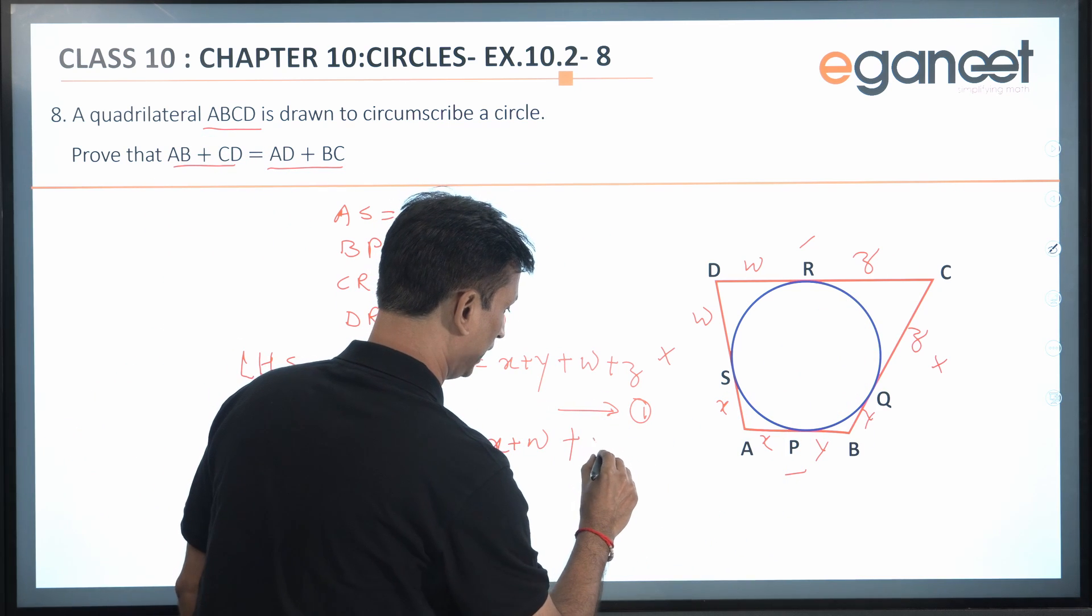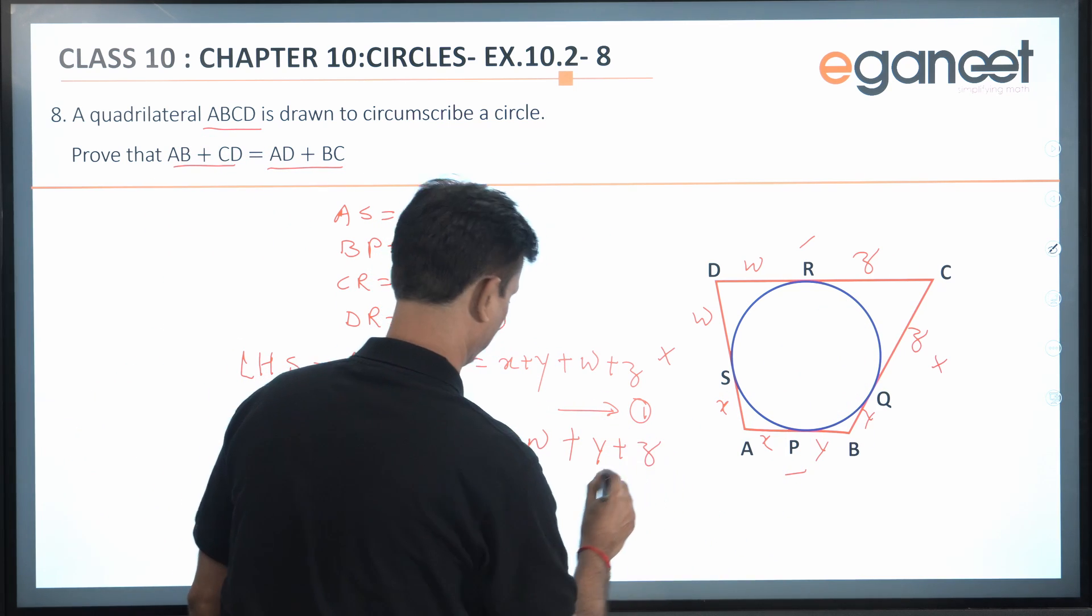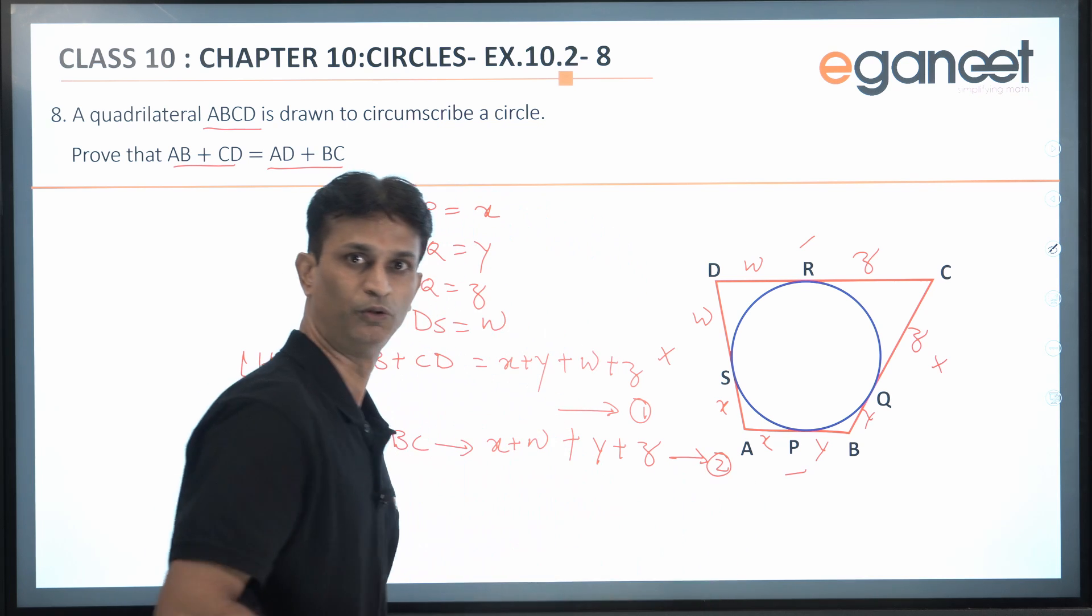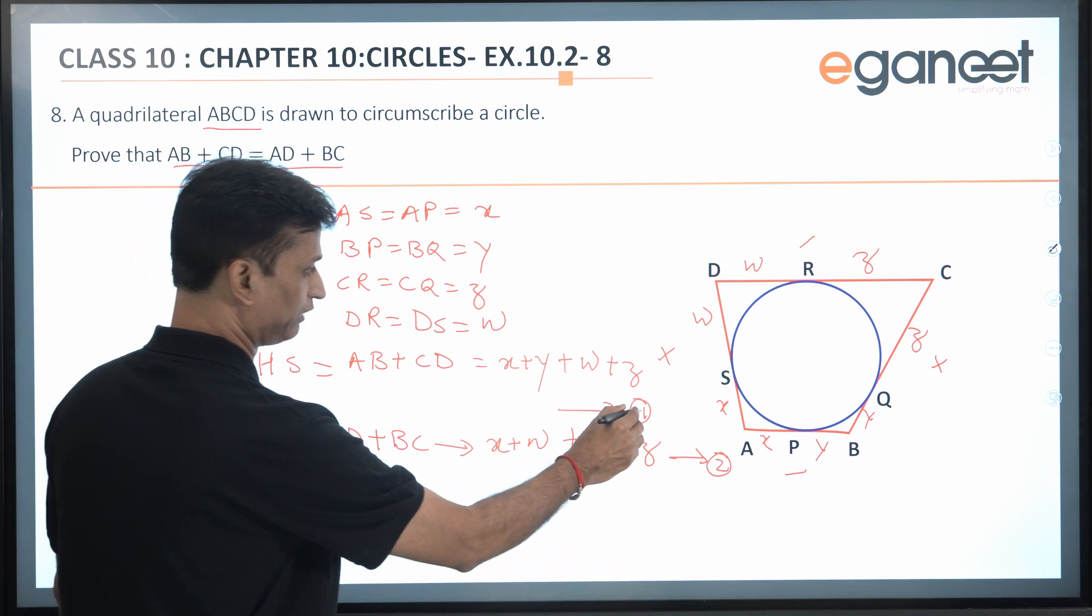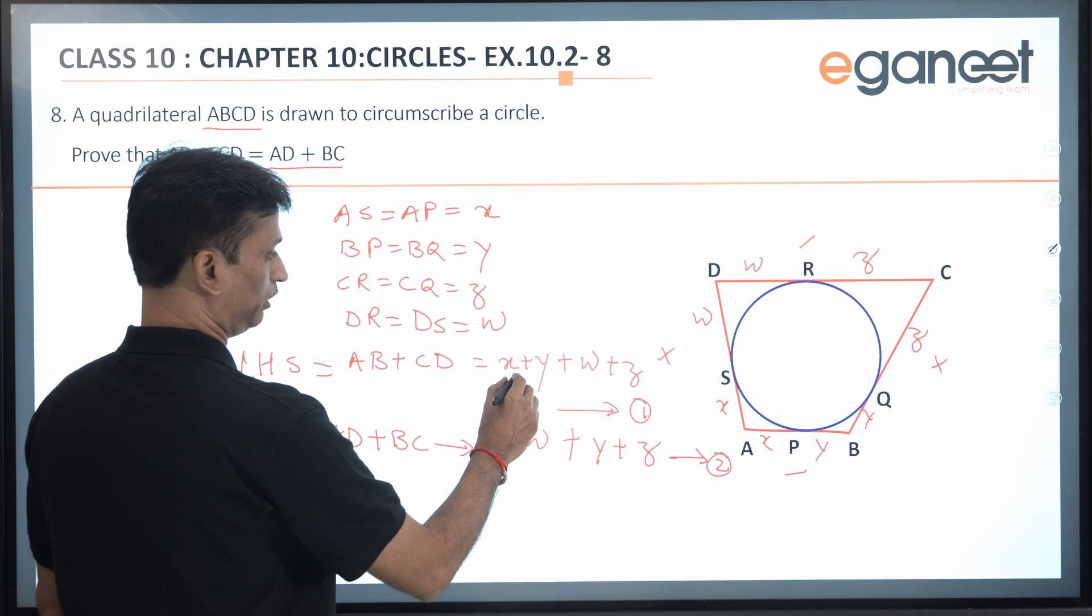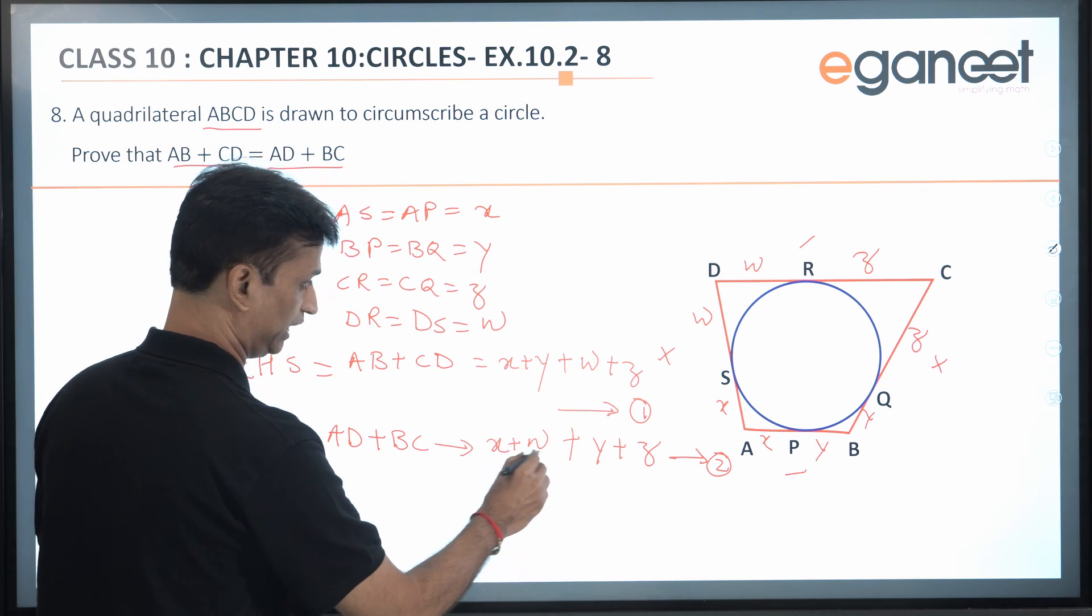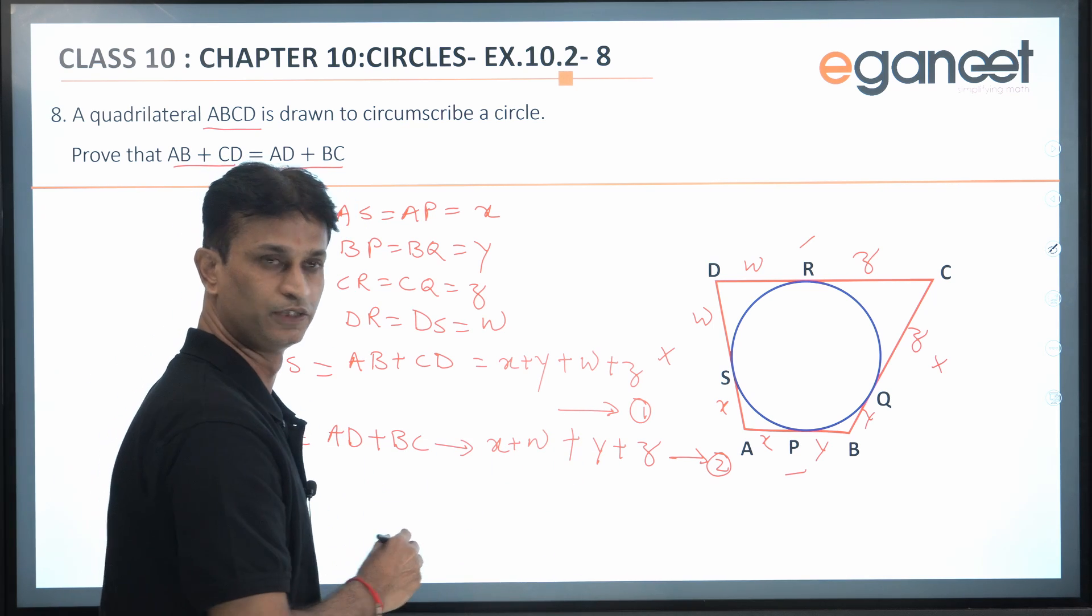BC will be y + z. We call this as equation 2. Now if you look at equation 1 and equation 2, on the right-hand side I am getting x + y + w + z, and in equation 2 again I am getting x + w + y + z.